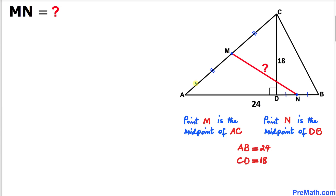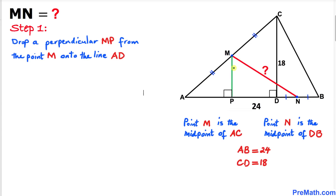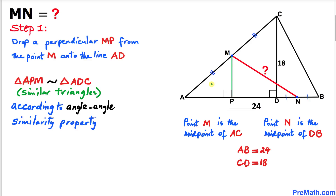Let's get started with the solution. Our first step is to draw a perpendicular MP, where P is some point on line segment AD. We can see that smaller triangle APM and the bigger triangle ADC are similar triangles according to the angle-angle similarity property, since this angle and this angle are each 90 degrees.